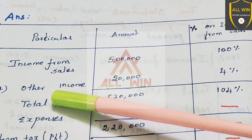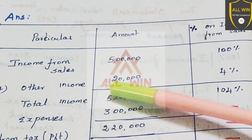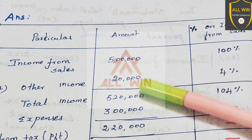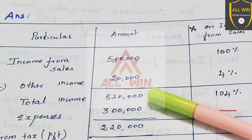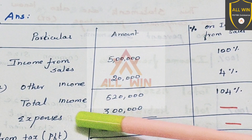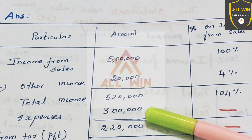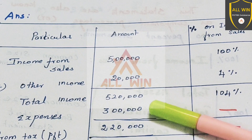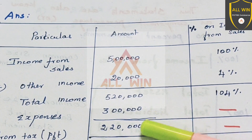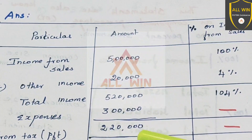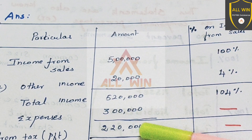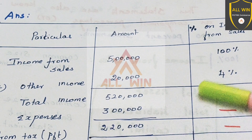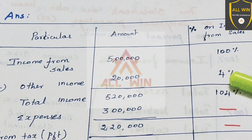Income from sale is 5 lakhs. Income from other incomes is 5 lakh 20,000. Expenses are 3 lakhs, and profit is 2 lakh 20,000. It is easy to get the percentage on income from sale.